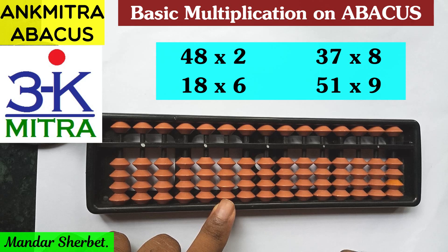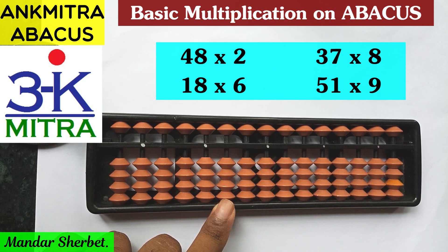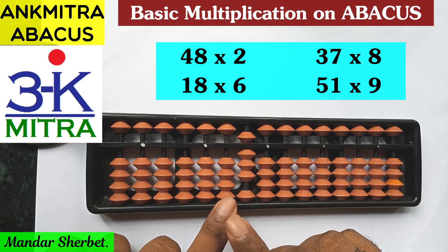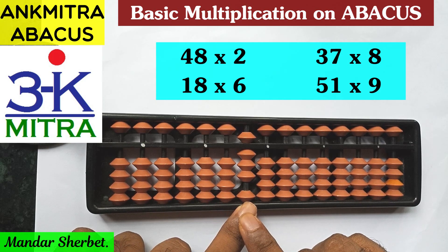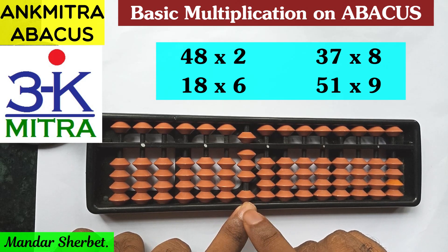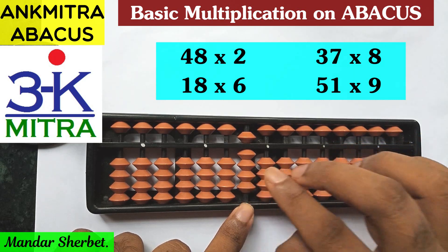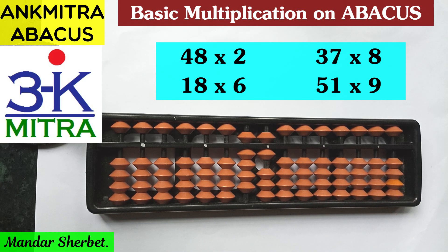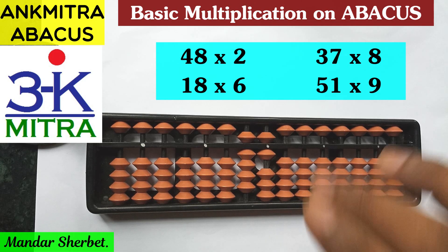The first step is 4 multiplied by 2 — that is the tens-place digit of the first number multiplied by the multiplier 2. The answer is 8, but as mentioned, it should be read as 08 — so 0 on the third rod and 8 on the second rod. For the second step, we move one place to the right to the second rod, and now we take 8 multiplied by 2, which is 16. The 1 will be added on the second rod and 6 on the units place rod. The final answer is 96.